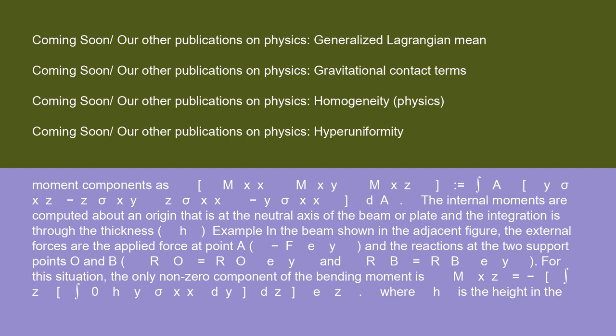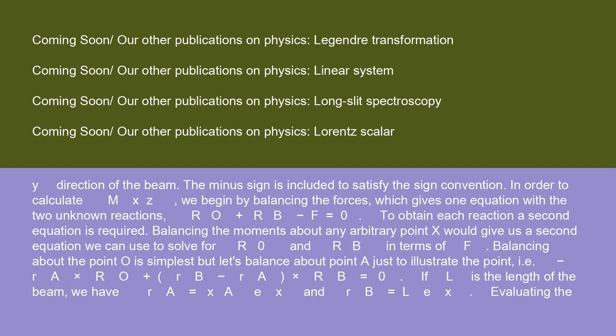Example: in the beam shown in the adjacent figure, the external forces are the applied force at point A (-F·ey) and the reactions at the two support points O and B: RO = RO·ey and RB = RB·ey. For this situation, the only non-zero component of the bending moment is Mxz = -∫z ∫0^h y·σxx dy dz, where h is the height in the y direction of the beam. The minus sign is included to satisfy the sign convention. In order to calculate Mxz, we begin by balancing the forces, which gives one equation with the two unknown reactions: RO + RB - F = 0. To obtain each reaction, a second equation is required.